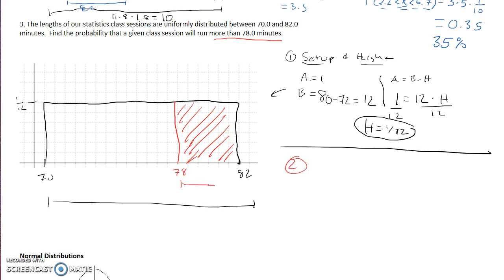To find the probability that they asked us in the second question, the second part of this problem, we need to just do base times height, right? So how do I find this base? Find the base, we're going to do 82 minus 78 which is 4.